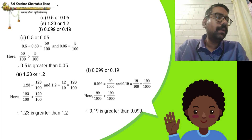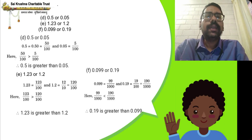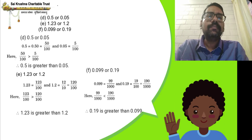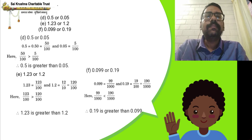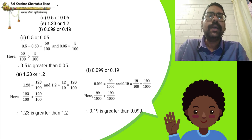Which is greater, 0.5 or 0.05? The whole number part is 0 in both decimals. Comparing the tenths part: the first decimal has 5 and the second has 0. Therefore 0.5 is greater than 0.05.